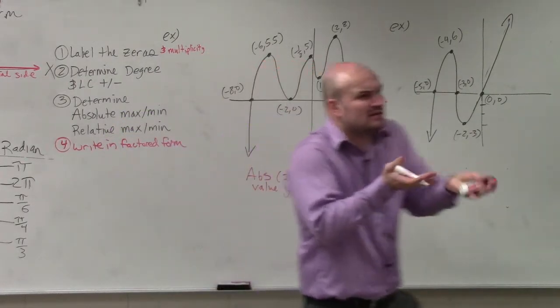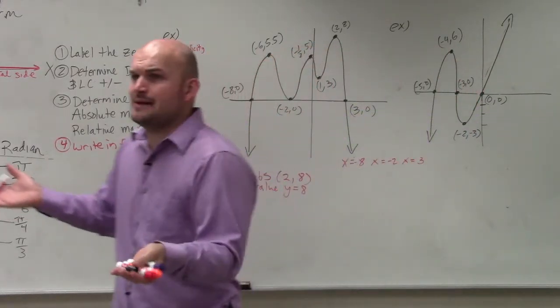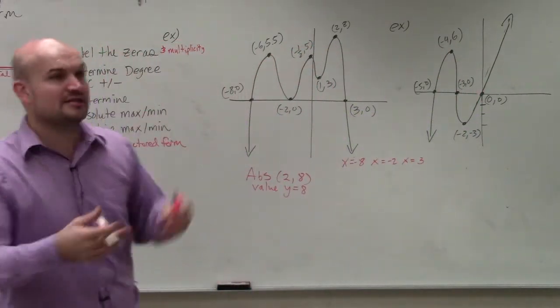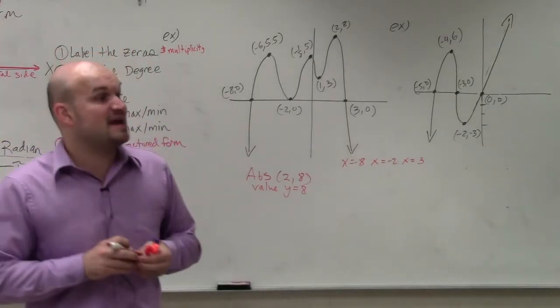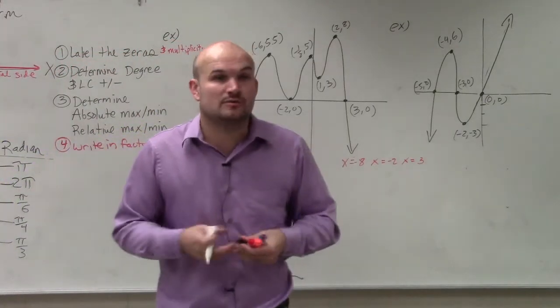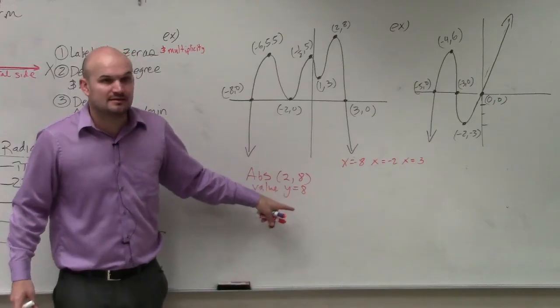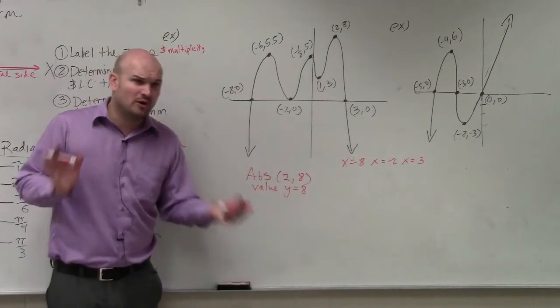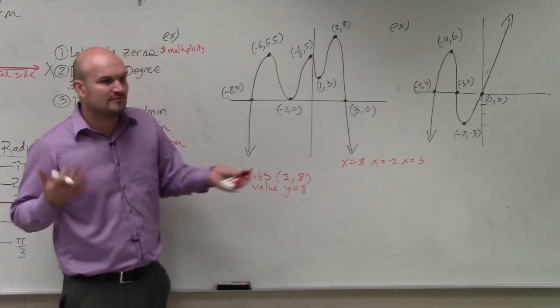So it depends on what the question is. They might say, at what point does the absolute max occur? And you'd say it occurs at the point 2 comma 8. Or they might say, what is the absolute maximum value? Well, the absolute maximum value is y equals 8. Does that make sense? So I'm giving you both sides of it, because I don't know what they might ask.